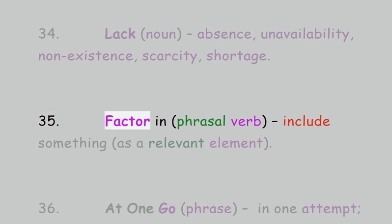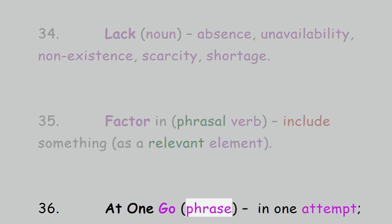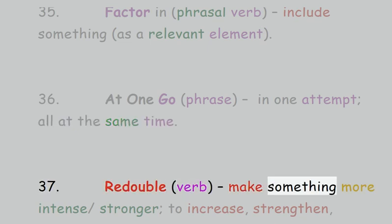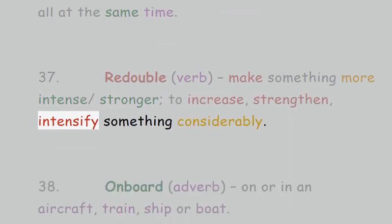35. Factor in, phrasal verb: include something as a relevant element. 36. At one go, phrase: in one attempt, all at the same time. 37. Redouble, verb: make something more intense or stronger, to increase, strengthen, intensify something considerably.